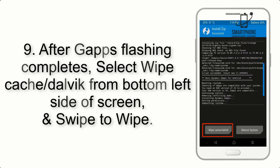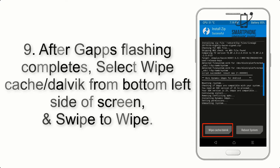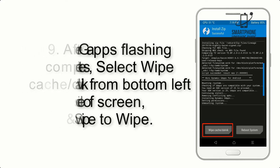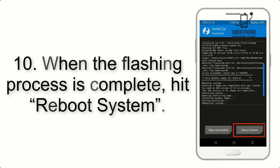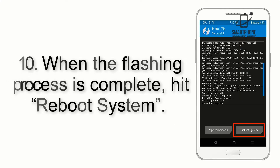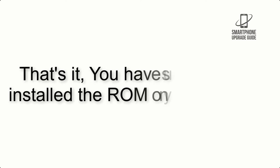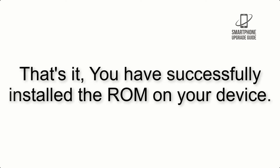Step 9: After GApps flashing completes, select Wipe Cache and Dalvik from the bottom left side of the screen and swipe to wipe. Step 10: When the flashing process is complete, hit Reboot System. That's it — you have successfully installed the ROM on your device.